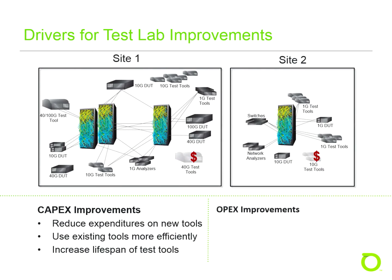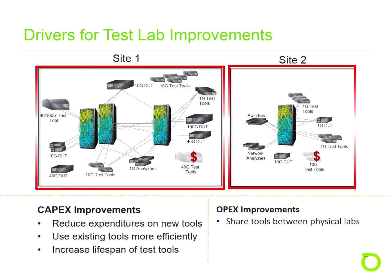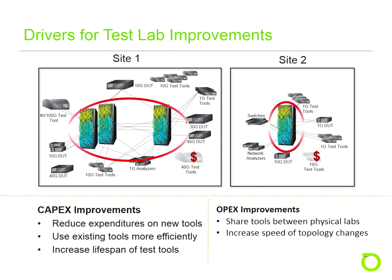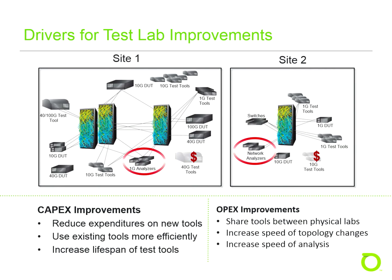On the OPEX side, sharing tools through an automation system can improve the efficiency of lab operations and test engineers by decreasing the amount of time spent waiting for tools to become available. Next, time-consuming topology changes can be automated — since all configuration changes are done remotely via software, downtime caused by failed cables and dirty connectors is nearly eliminated. And finally, the task of configuring taps or mirror ports for test stream analysis can be simplified using centralized resources and functions.